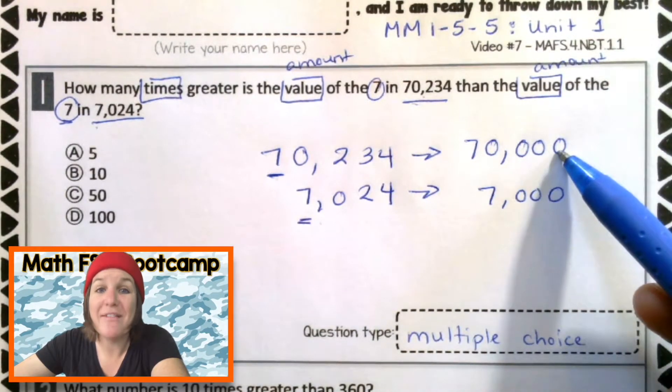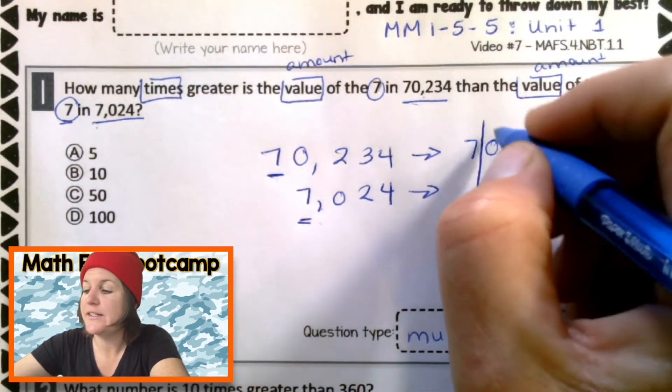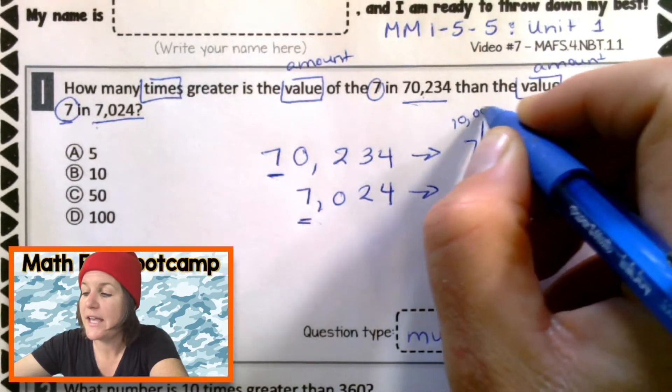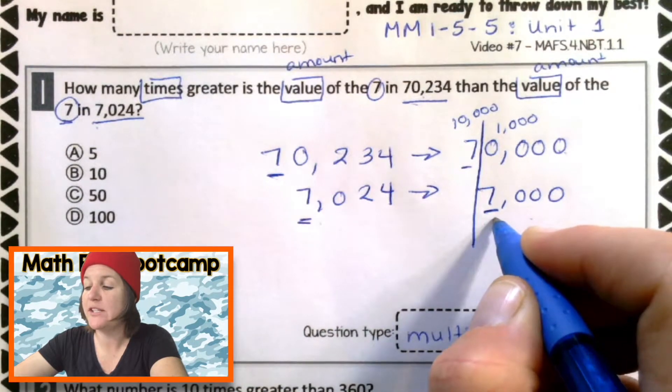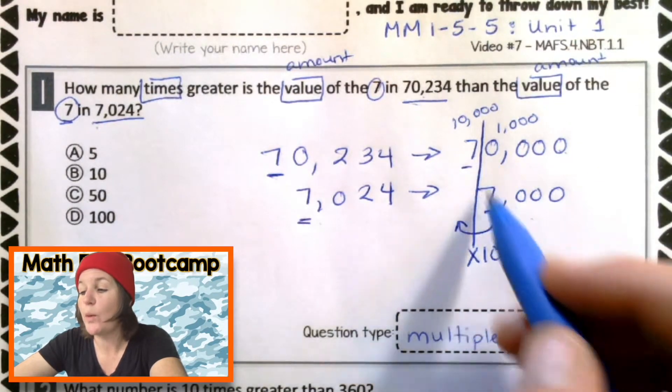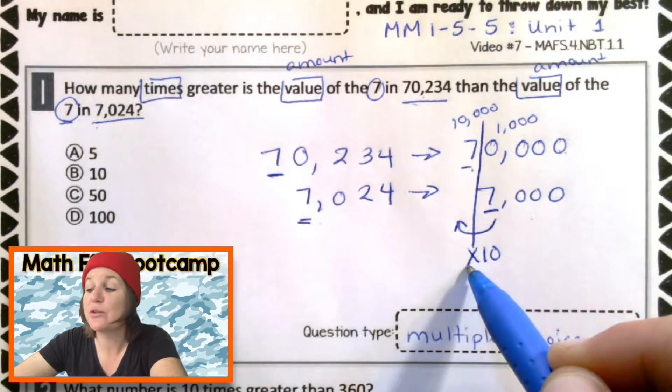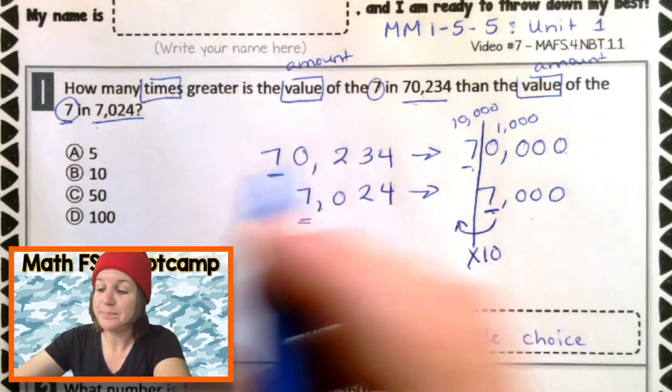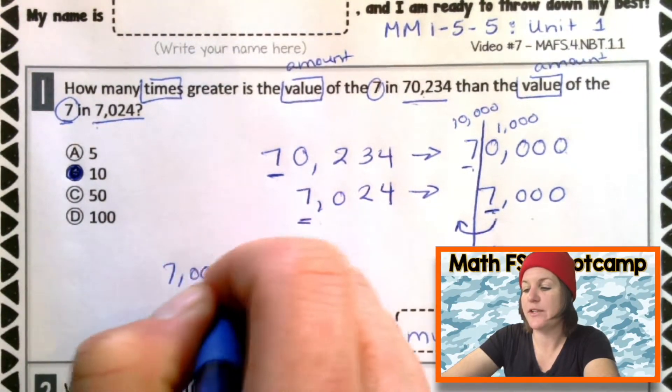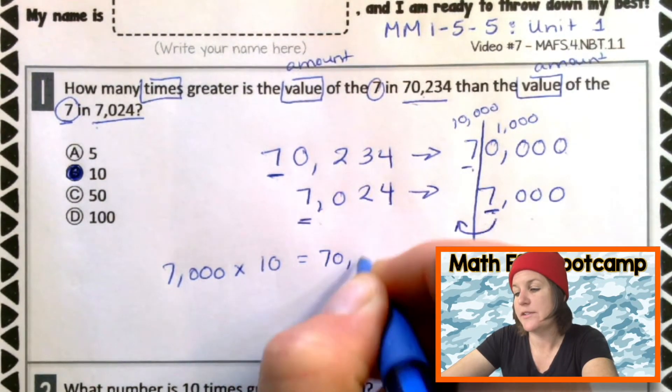So how many times greater is 70,000 than 7,000? Well, if you notice, this seven is in the thousands place. This seven is in the 10,000 place. And we're going from one place value into the very next one. We're always multiplying by 10. Or if we're going back, we're dividing by 10. So that means that this seven right here is 10 times greater than this seven. Do we see that? We do. And it's right there, B, which also makes sense because 7,000 times 10 equals 70,000.